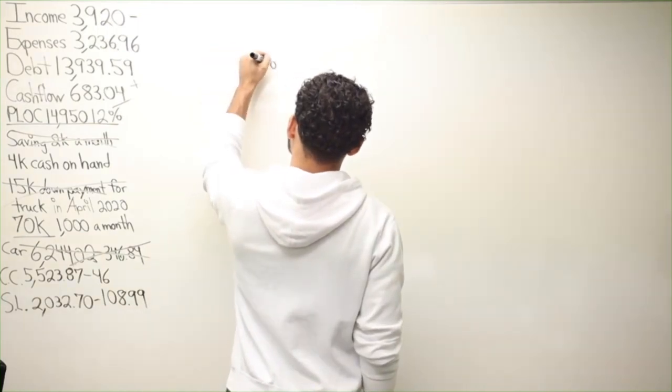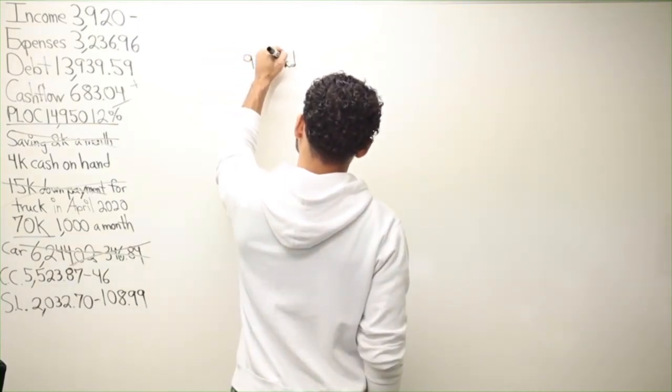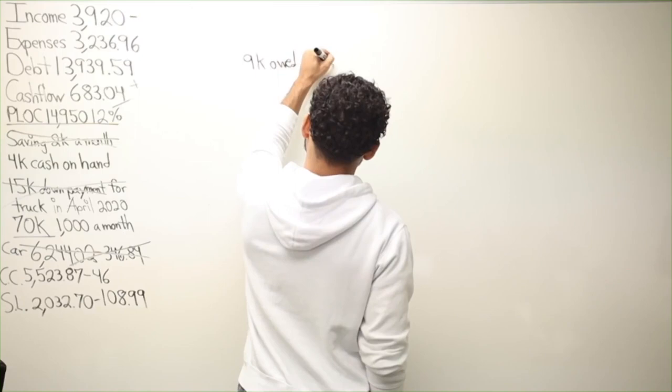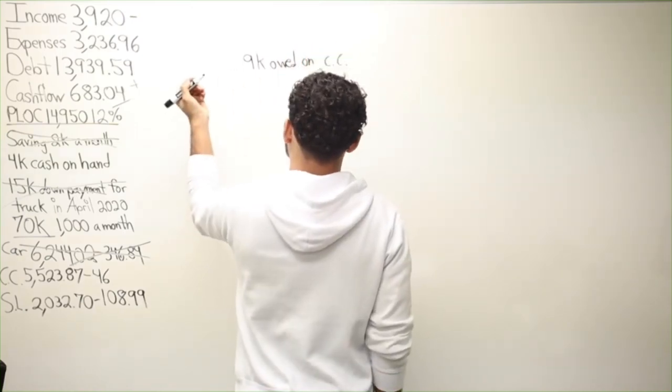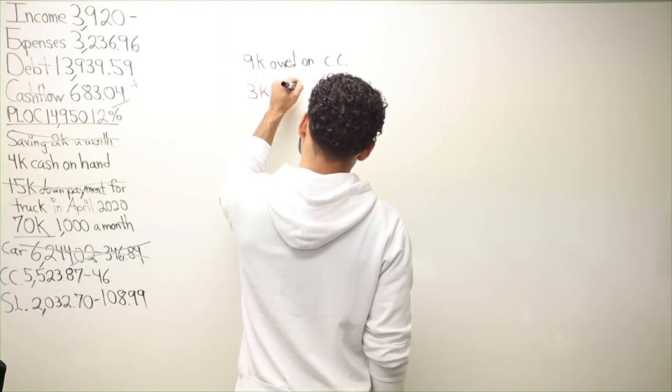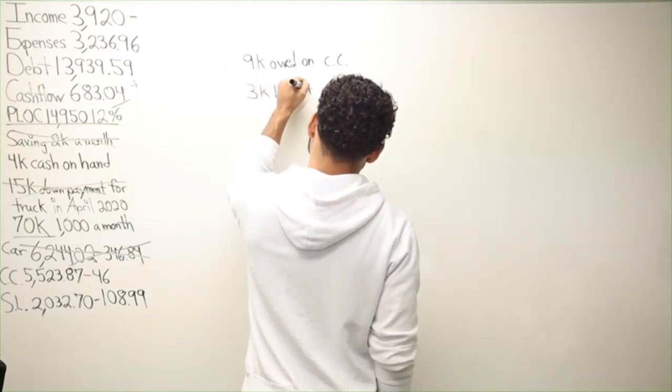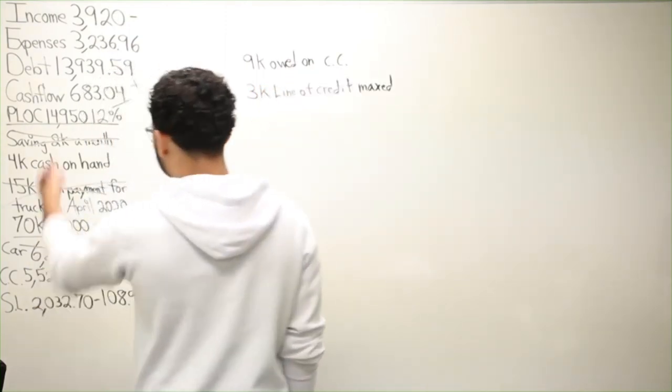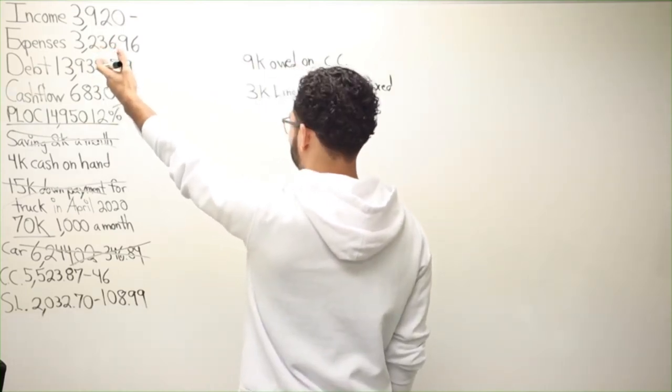So we've got 9k owed on credit and then 3k line of credit maxed out. So Asia, what are your four major numbers?